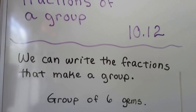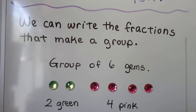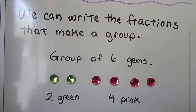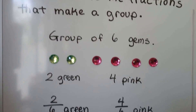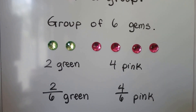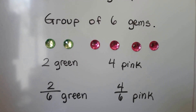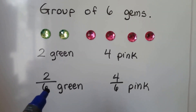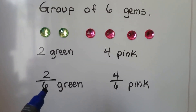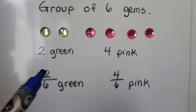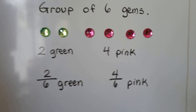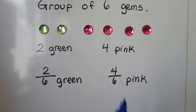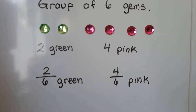We can write the fractions that make a group. Here we have a group of six gems — two green ones and four pink ones. Because we have a group of six, that's our denominator, the bottom number. There's six in the group and two are green, so two-sixths are green. There's six in the group and four are pink, so four-sixths are pink.